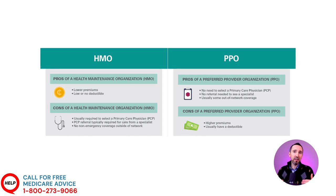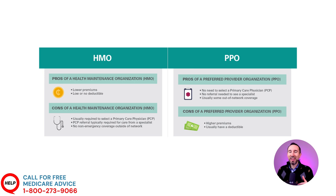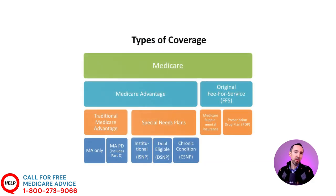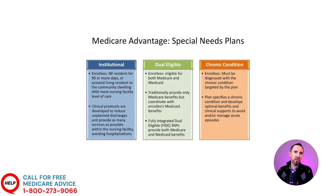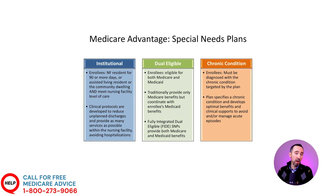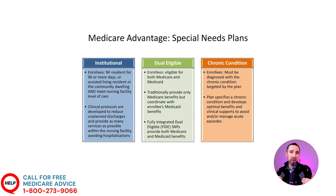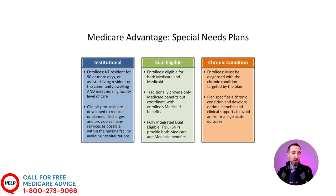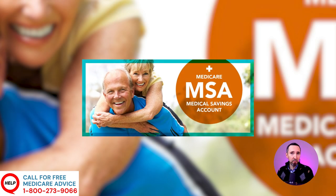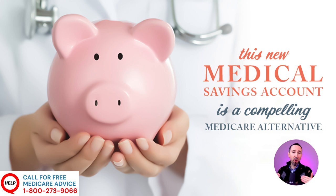Another common type is the Special Needs Plan (SNP), which offers coverage to people with specific diseases, certain health care needs, or limited income. SNPs cover all the same Part A and Part B benefits but offer extra coverage tailored to specific groups. There is also a Medicare Medical Savings Account (MSA), a type of health plan designed to give you freedom over your health care decisions. It is premium-free (though you still pay your Part B premium), has a high deductible, and the government funds a special savings account to help pay toward that deductible.